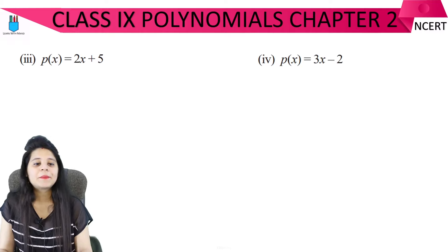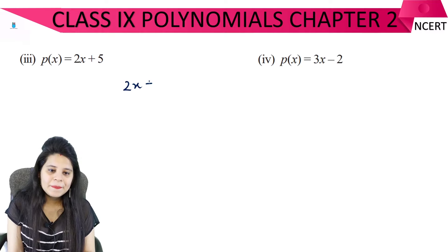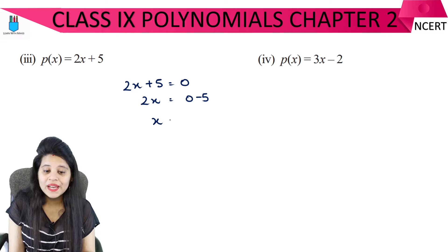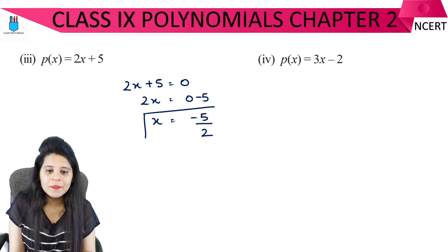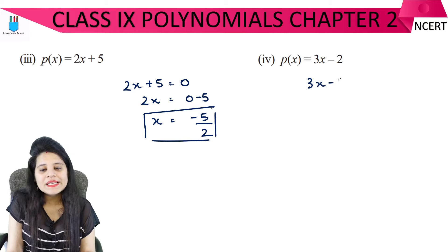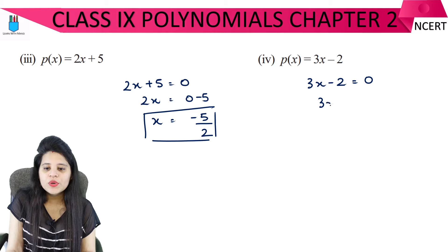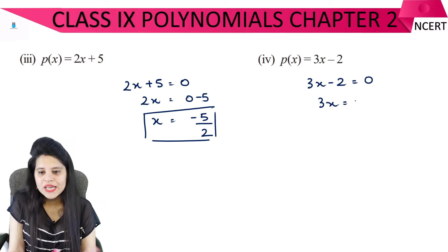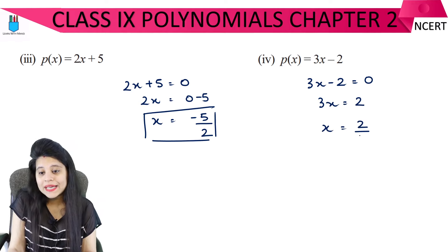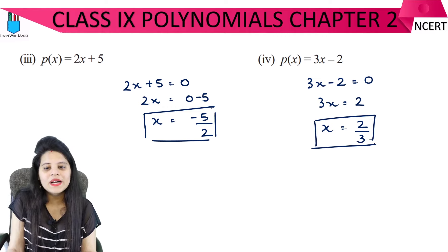For the third part, we have 2x plus 5. Set 2x plus 5 equal to 0. Then 2x equals minus 5, so x equals minus 5 upon 2.